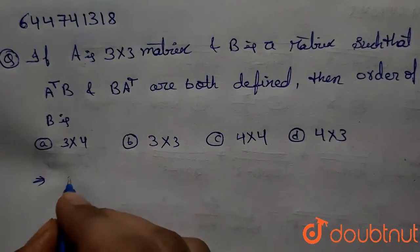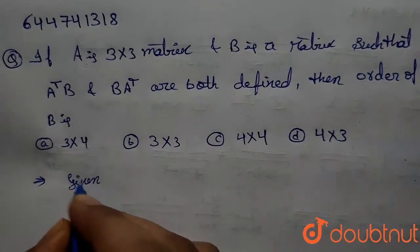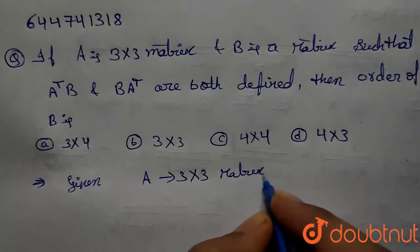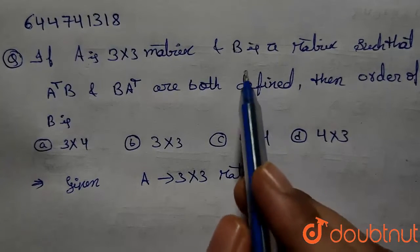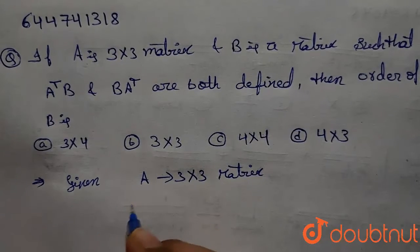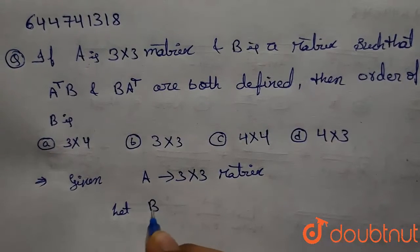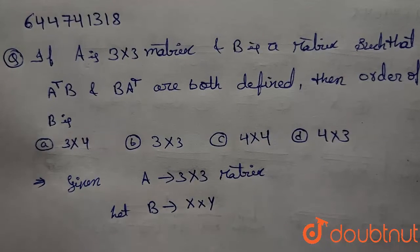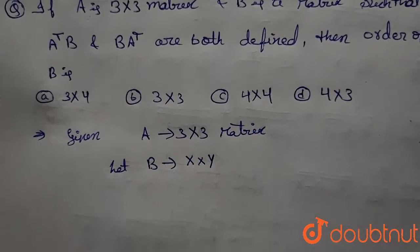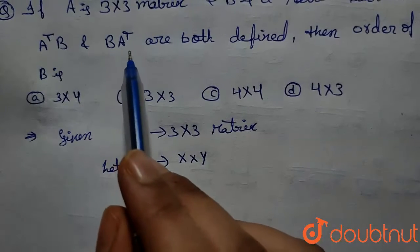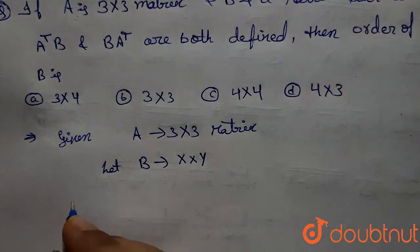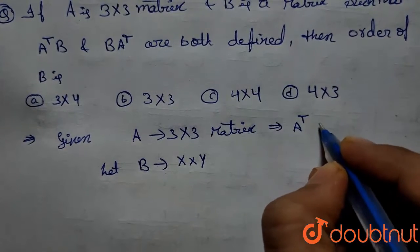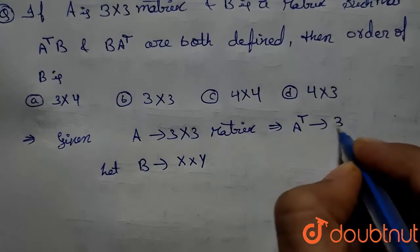Given that A is a 3×3 matrix, and B is a matrix whose order is not given. Therefore, let B be a matrix of order X×Y. Also given that A transpose B and B A transpose are both defined. Since A is a 3×3 matrix, this implies A transpose also has order 3×3.